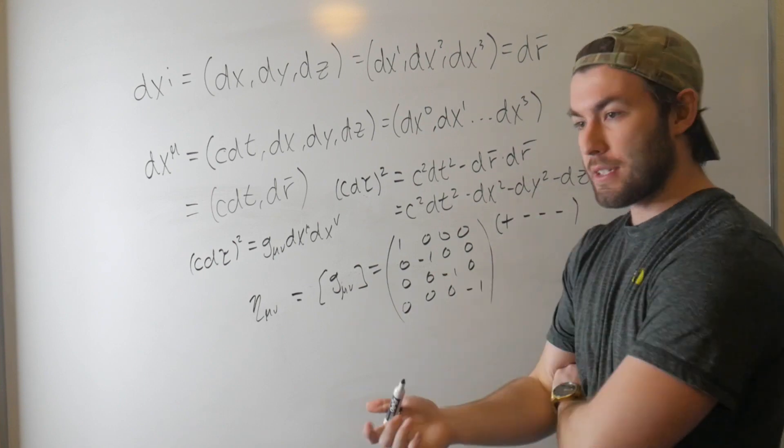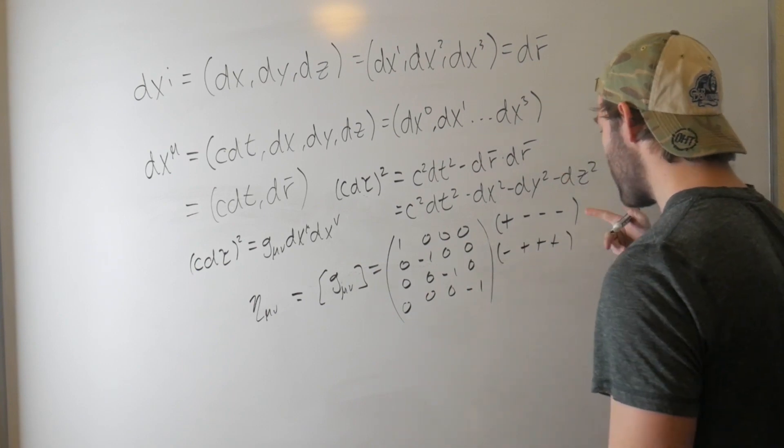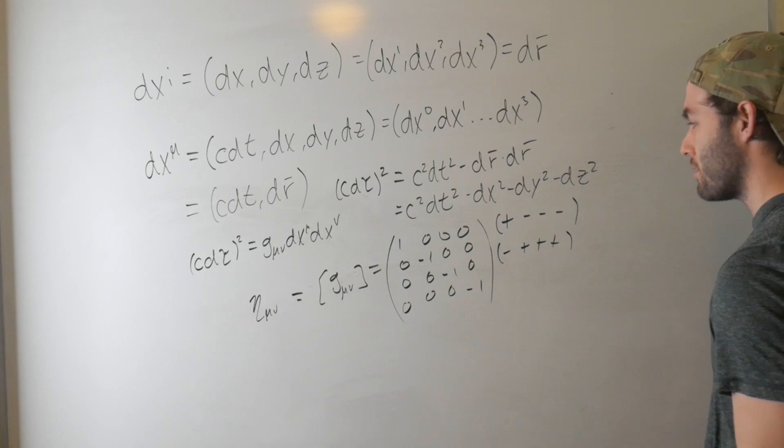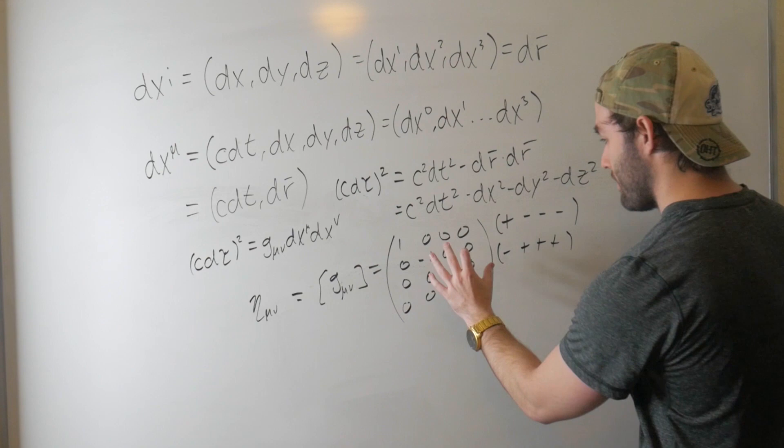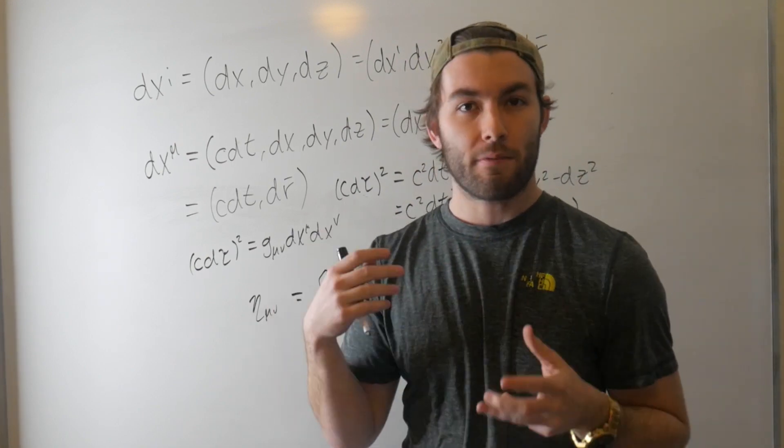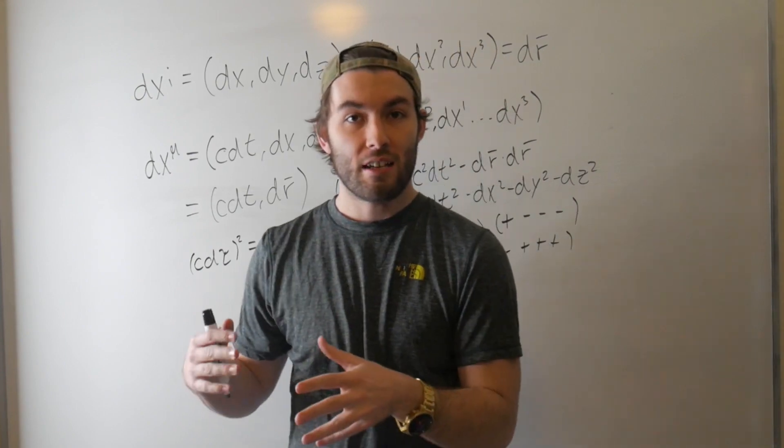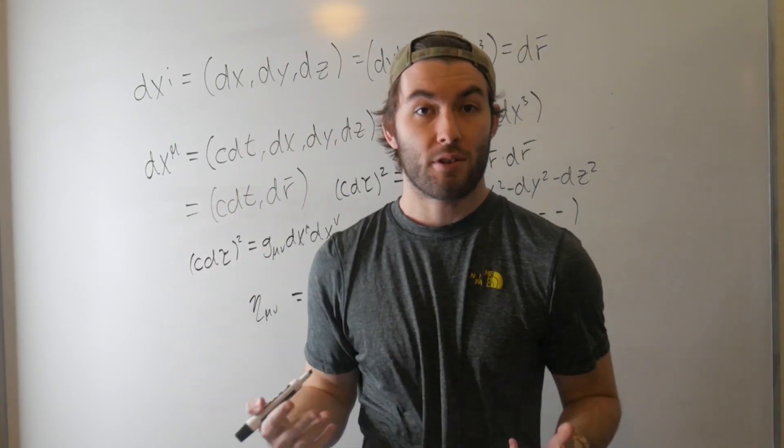But that's a convention, other physicists might use, say, the minus, plus, plus, plus. The important part isn't that people use different signatures. The important part is that there's always a relative minus sign for the spatial versus the time part, and this illustrates the need for a type of distinction that will eventually get us to subscripts and superscript indices when describing different types of vectors.